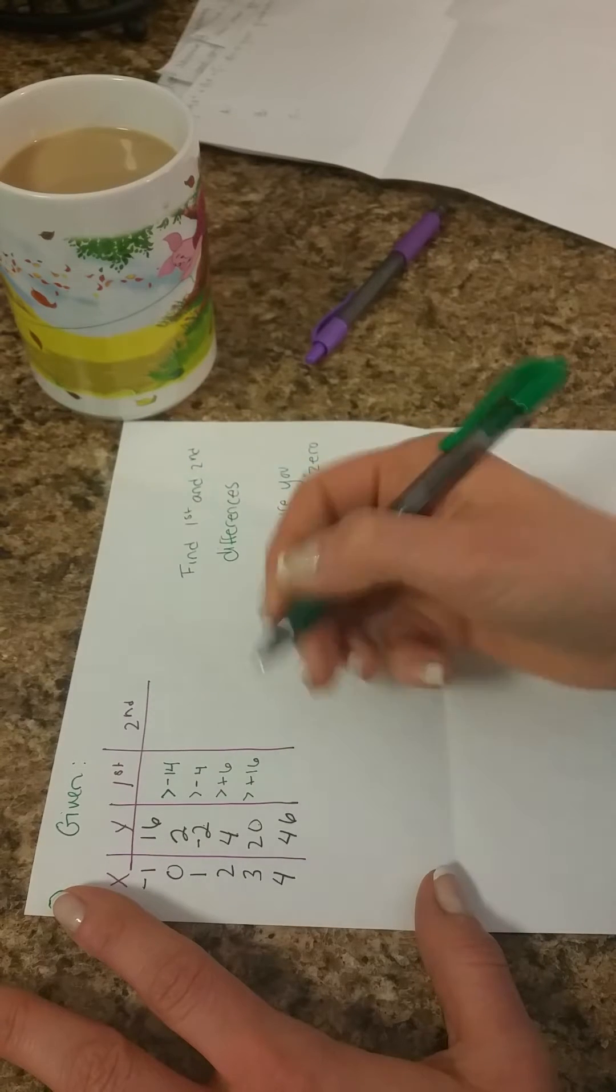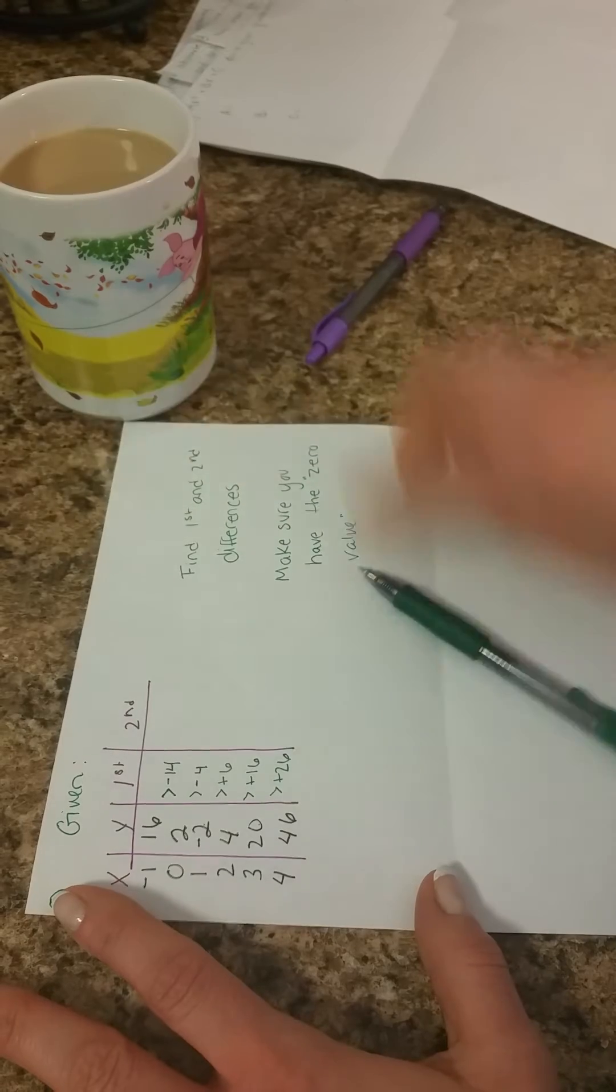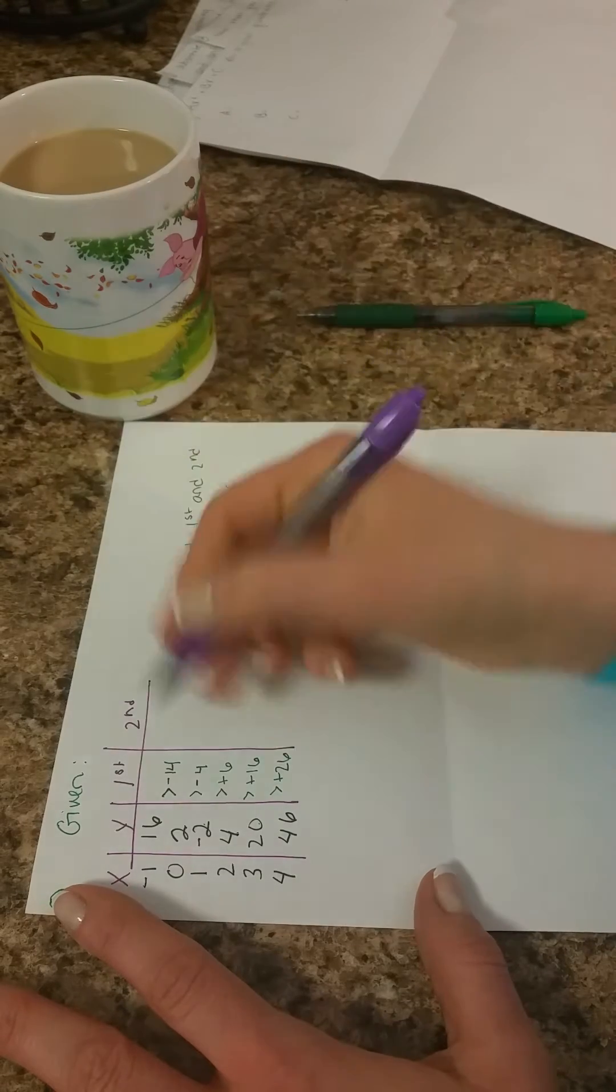4 to 20 is plus 16. And then 20 to 46 is plus 26. Let's just get another color, obviously.